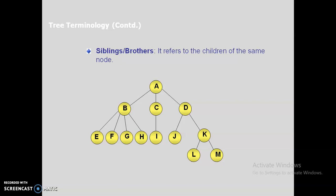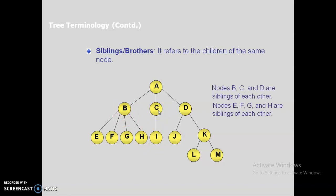Siblings refers to the children of the same parent. A is a parent with children B, C, and D, so B, C, and D are siblings — they are all partitioned from the same parent. E, F, G, H are siblings because B is their parent. H and I are not siblings because H's parent is B and I's parent is C.